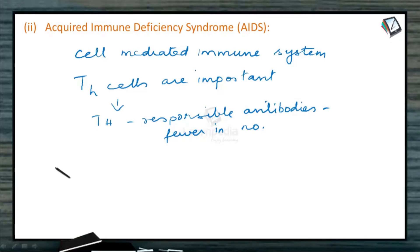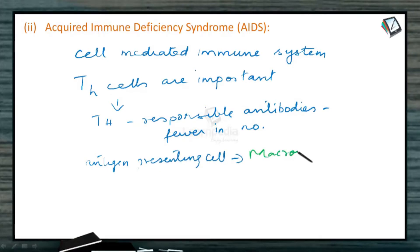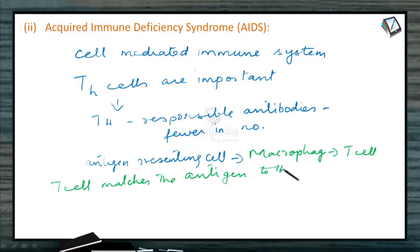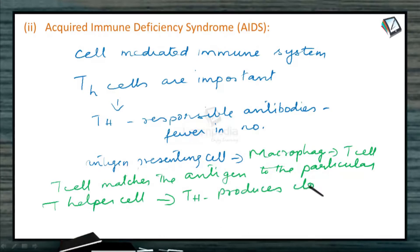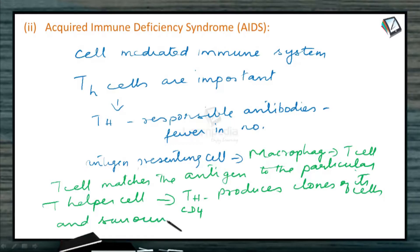Once more, in case you have forgotten: the antigen is presented to the macrophage by the antigen presenting cell, and then the macrophage presents it to the T cell. The T cell then matches the antigen to the particular T helper cell. The T helper cell, CD4, produces clones of itself, surrounds the antigen, and renders it harmless. They either introduce it to the cytotoxic cells or produce cytokines — the messengers — to announce to the immune system about the antigen.